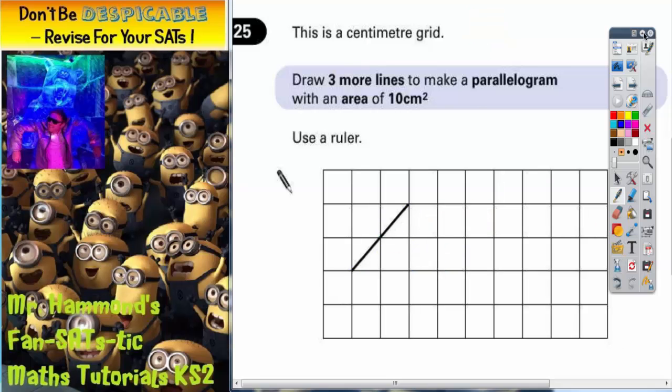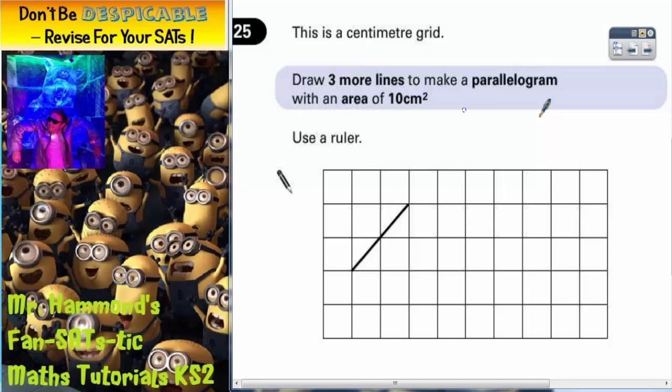And the way of doing this is to revise the formula for a parallelogram. So the area of a parallelogram is equal to the base times perpendicular height. Perpendicular means straight up.